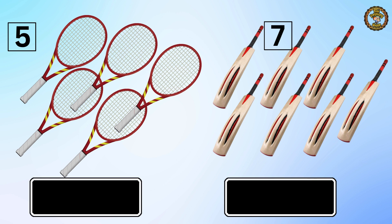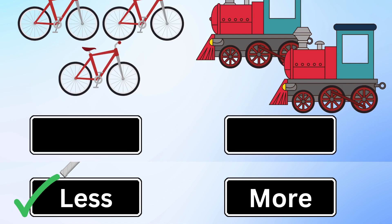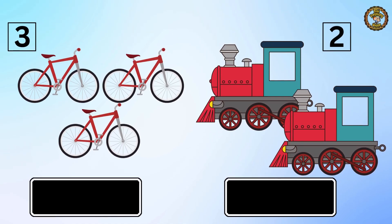Then we have five badmintons on the left and seven bats on the right. Which one is less? That's correct — five badminton are less than seven bats.